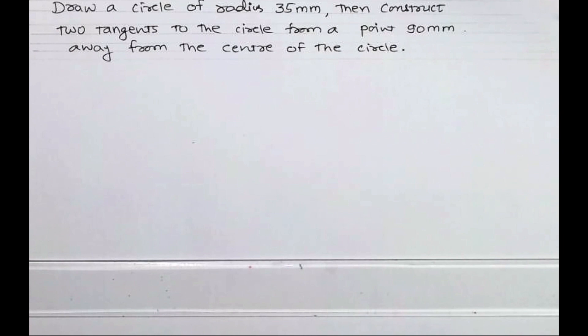Welcome to technical drawing. Today we'll see how to draw a circle of radius 35mm and then construct two tangents to the circle from a point 90mm away from the center of the circle. We need to draw a tangent from a point which is outside the circle.